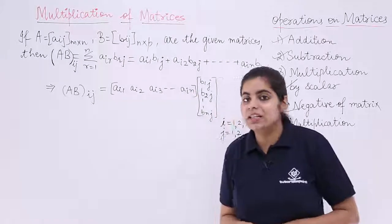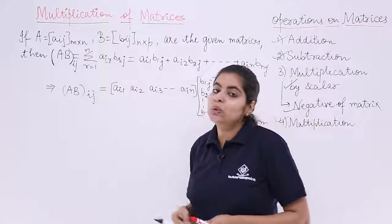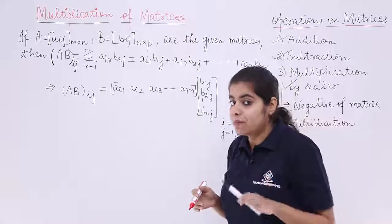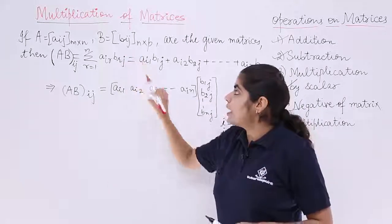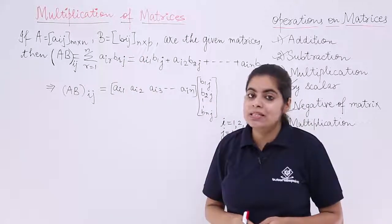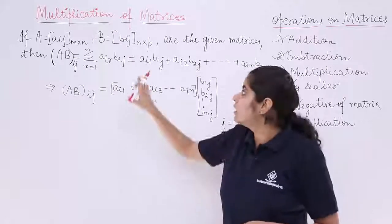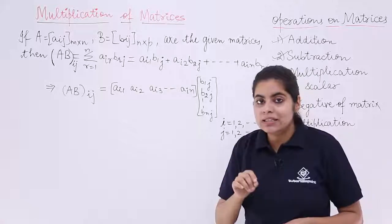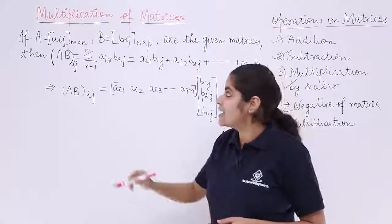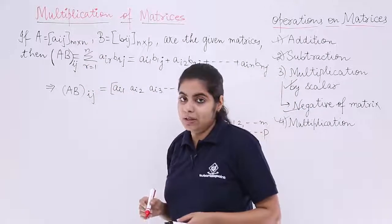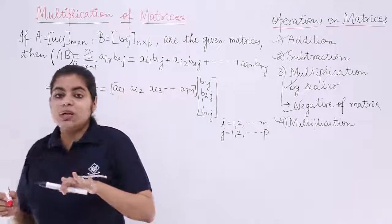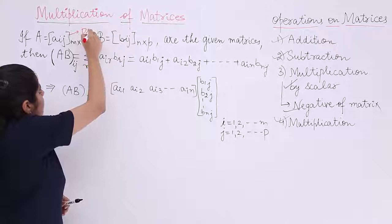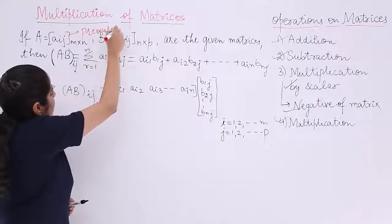Let's read the theory. If A equals Aij, M by N, that means I have a matrix A of M by N order. I also have a matrix B which has the elements listed as Bij and the order is N by P. What happens is, you have to consider the first matrix as the pre-multiplier. The first matrix is known as the pre-multiplier. I write the word here: pre-multiplier.